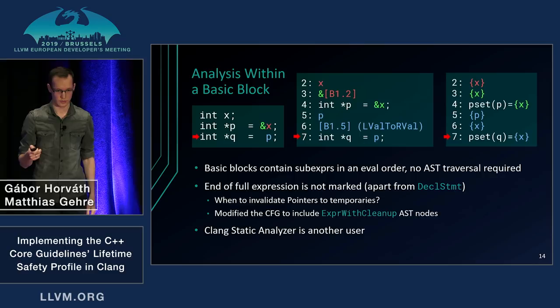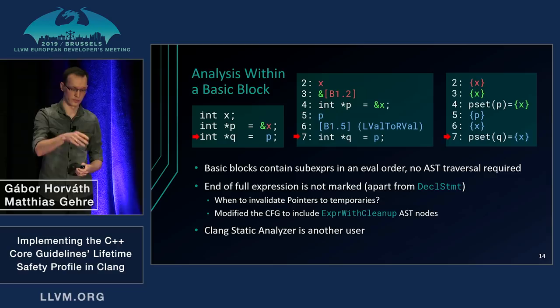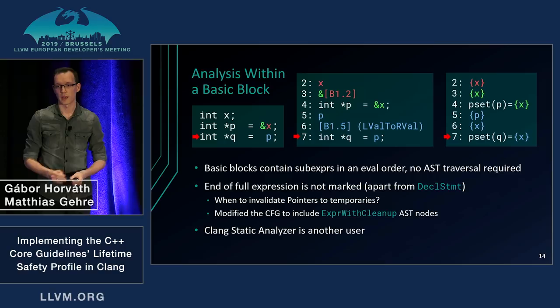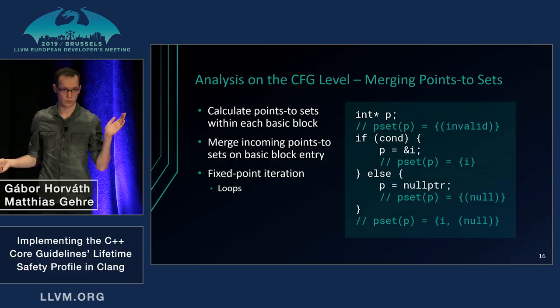The control flow graph not only includes expressions, there are also some extra elements — special markers. For example, we needed to add a marker saying where a statement ended, because it's not visible in the control flow graph anymore. You see a list of expressions but you don't know where the statement ended, and you need that to invalidate temporaries. Once you know how things work within the basic block, the next question is how does the analysis work if you have multiple basic blocks?